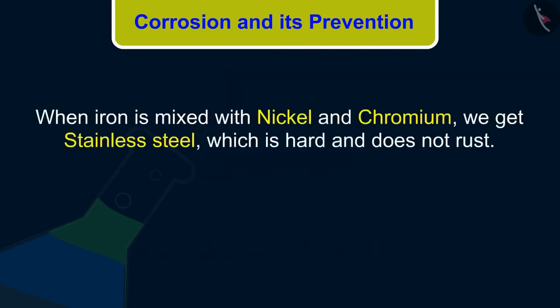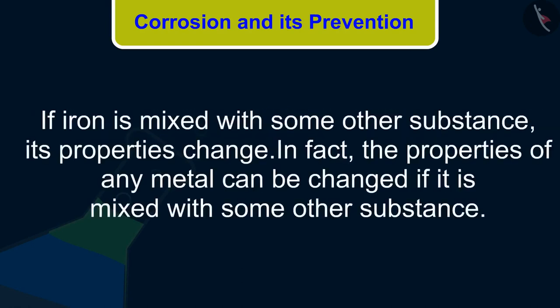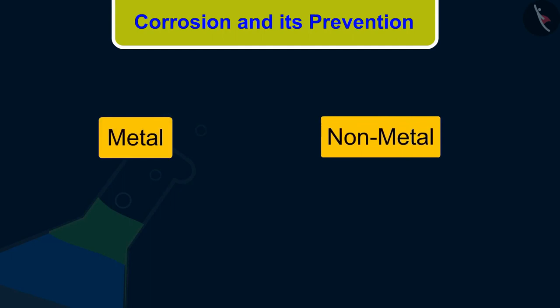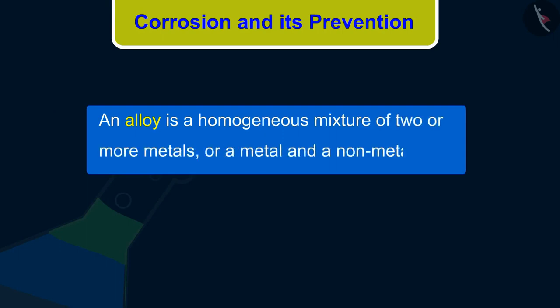When iron is mixed with nickel and chromium, we get stainless steel, which is hard and does not rust. Thus, if iron is mixed with some other substance, its properties change. In fact, the properties of any metal can be changed if it is mixed with some other substance. The substance added may be a metal or a nonmetal. An alloy is a homogeneous mixture of two or more metals, or a metal and a nonmetal.